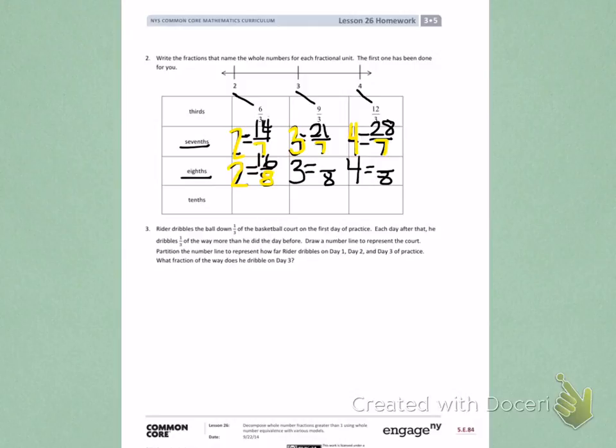To find a fraction that is equal to the whole number 3 with the denominator of 8, I'm going to multiply 3 times 8. 3 times 8 is 24. 24 8ths equals 3. Continue this by finishing multiplying 4 times 8 to get your numerator. Then complete tenths the same way.